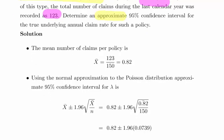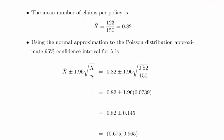Okay, so essentially what we have here is a mean number of claims per policy. And we just worked that out. That's X bar there with a bar on top. And we worked that out to be 123 divided by 150, which is 0.82.